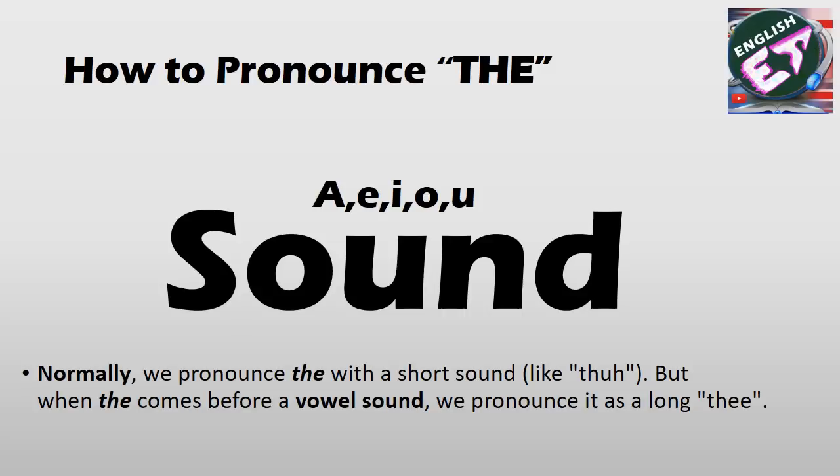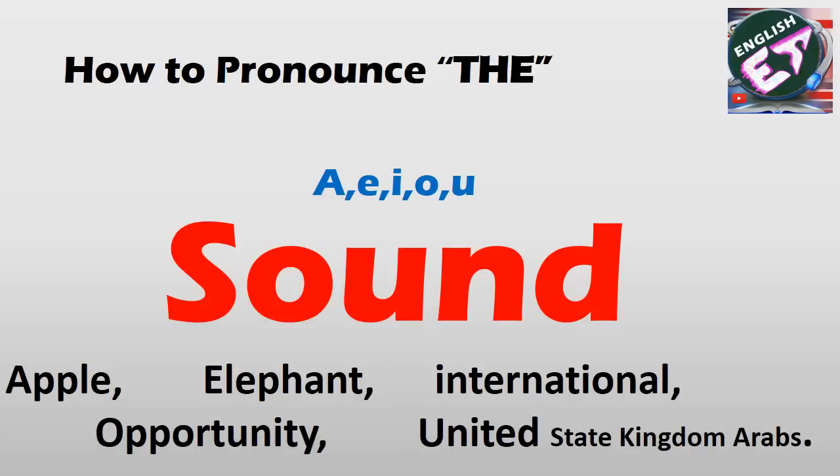Agar ek sound vowel wala sound de ta hai — 'umbrella' wala — toh woh mein manunga ki woh vowel sound de raha hai. Toh aise vowel sounds jo vowel sound se hi bante hain jaise: apple, elephant, ink pot, ice cream, orange, umbrella, ugly. Lafz vowel sound deta hai — kya hoga? Za we deal with: the people, the elephant, the international, the opportunity, the United States Kingdom.